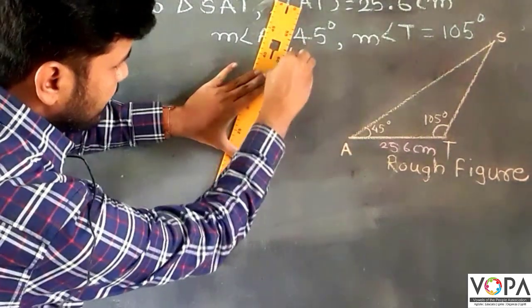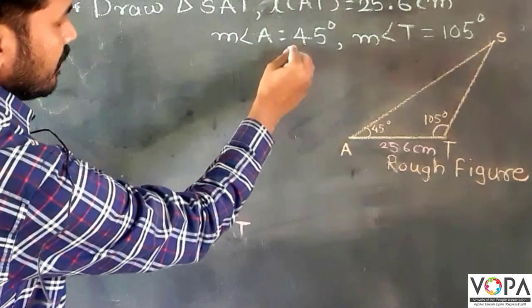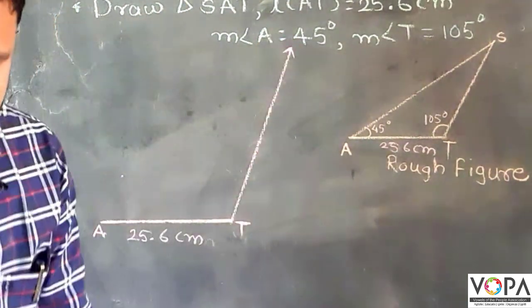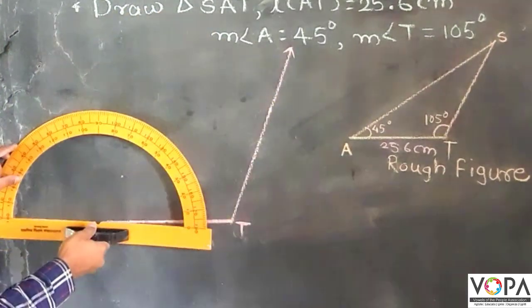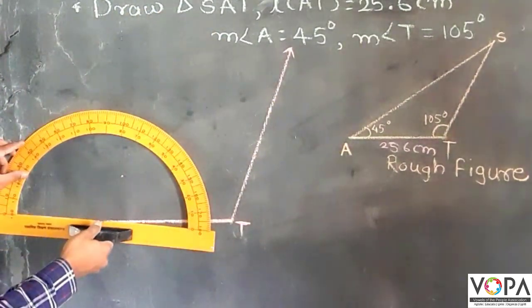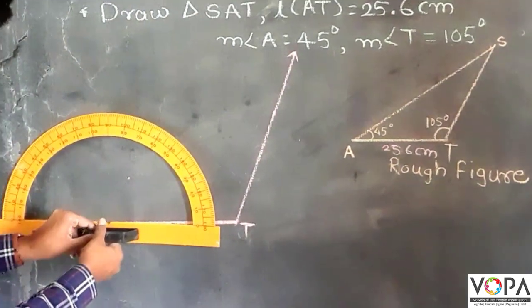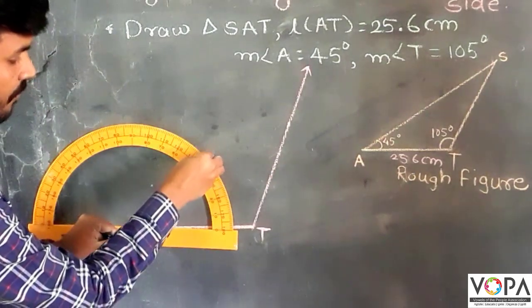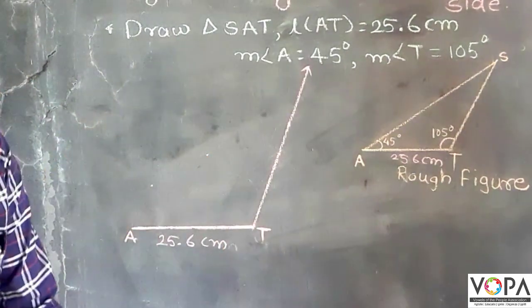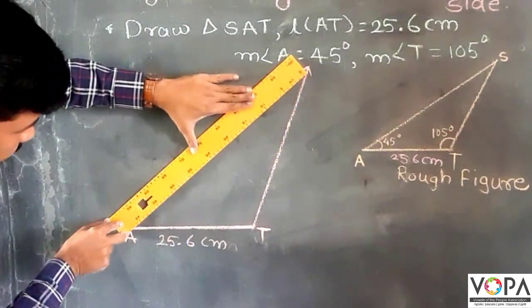Now put the protractor on point A, or vertex A, and measure angle A, which is 45 degrees. Here is 40, and here is 5. Join that point for the extended side.